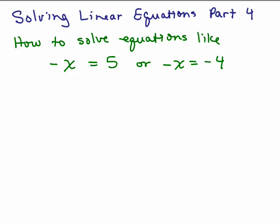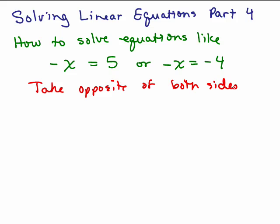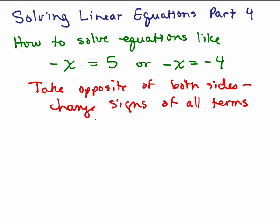Before doing a few more examples, I want to go over how to solve equations of this form where you have negative x equals 5, or negative x equals negative 4, because this is not solved for x. This says the opposite of x is 5. The simple way to do this is you just take the opposite of both sides, which means you change the signs of all terms on each side of the equation.